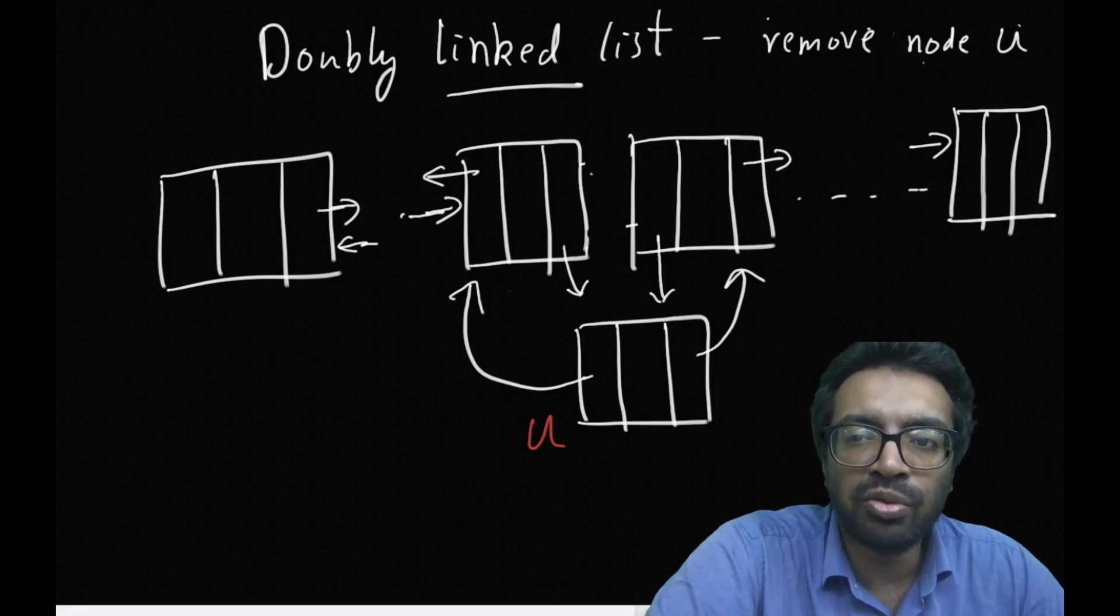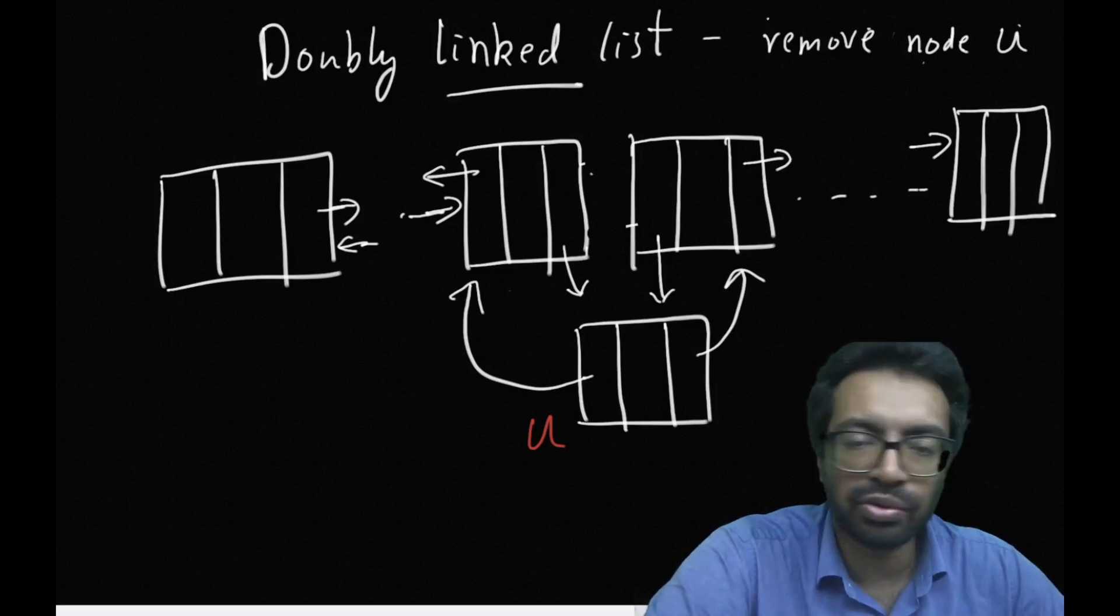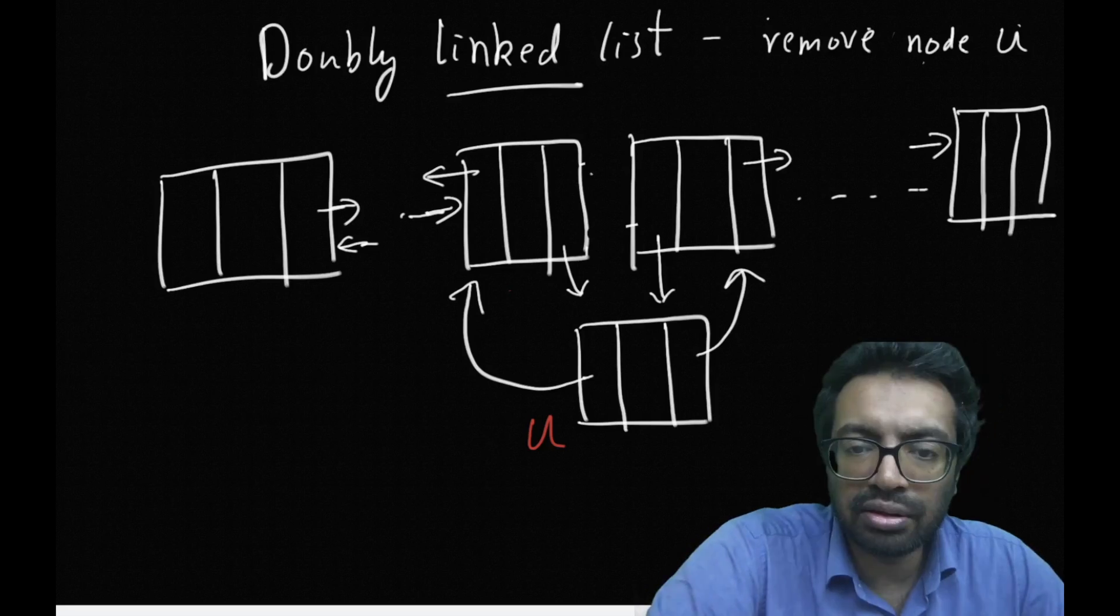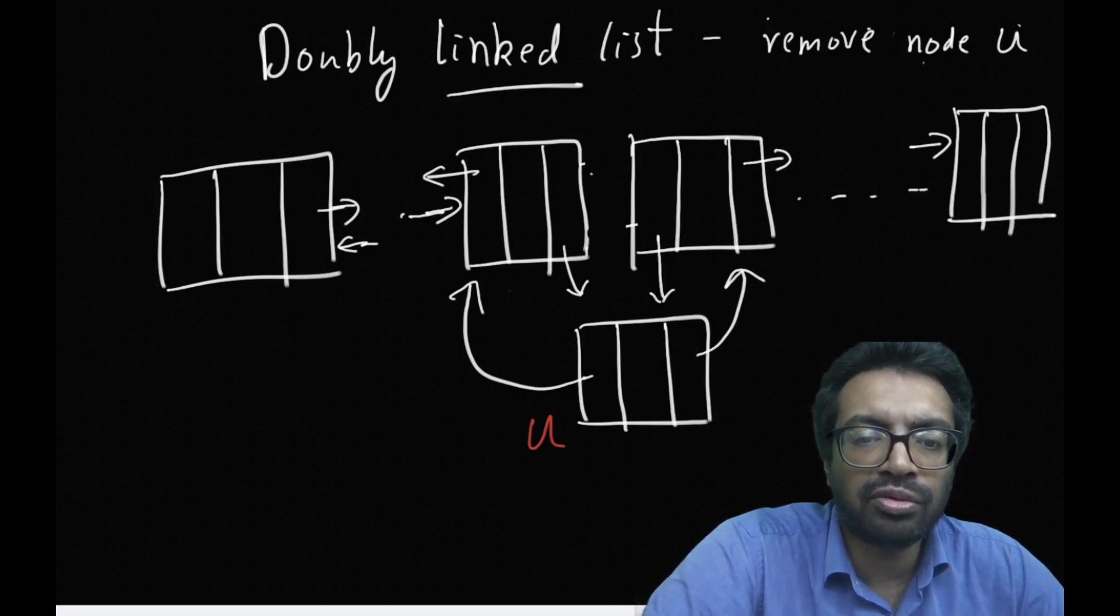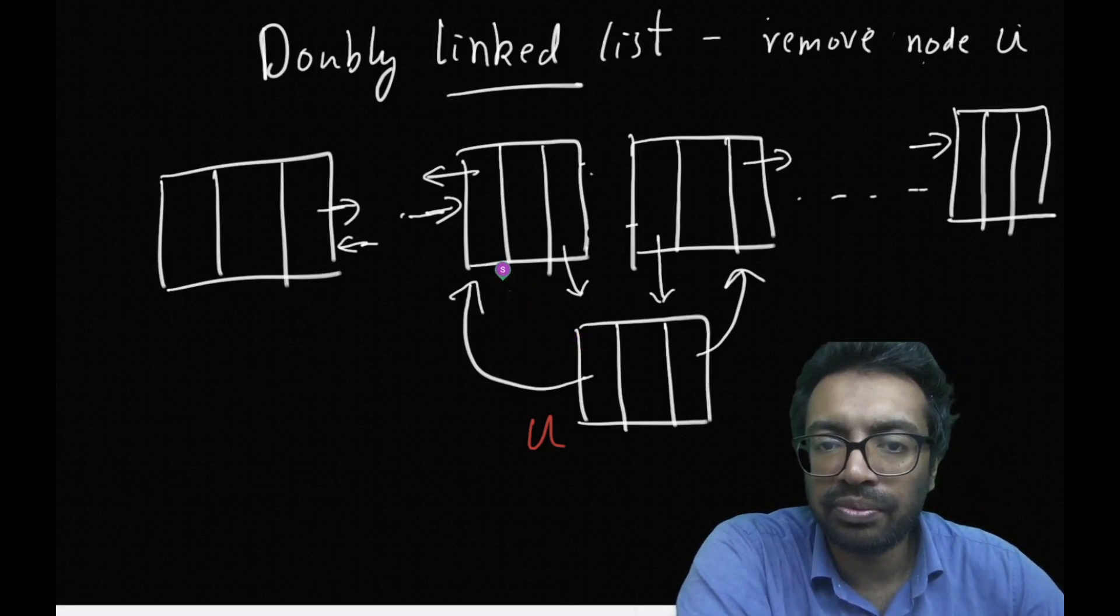We will discuss why this wouldn't have been possible in a singly linked list after we show how to do this. Now, how to do this? I want to remove U. So what I have to do is I have to traverse prev of U to find out the address of the previous node.